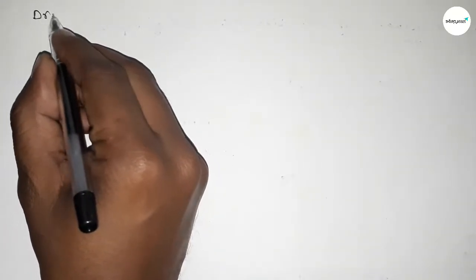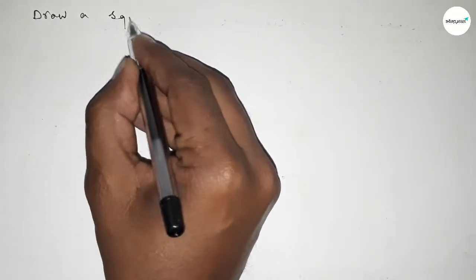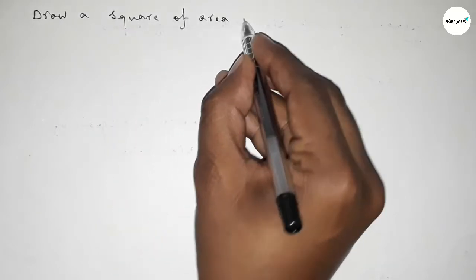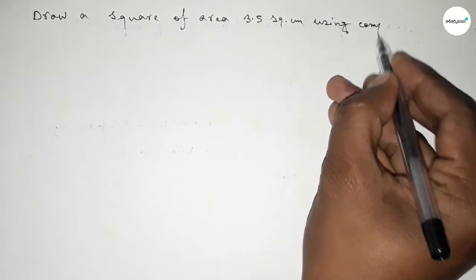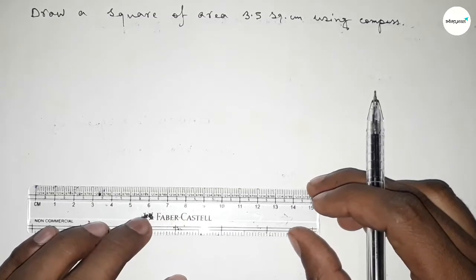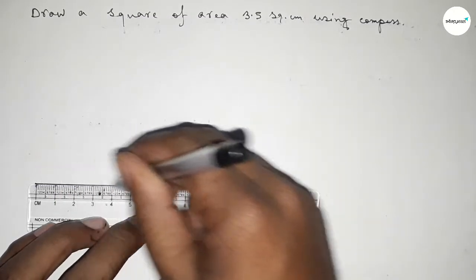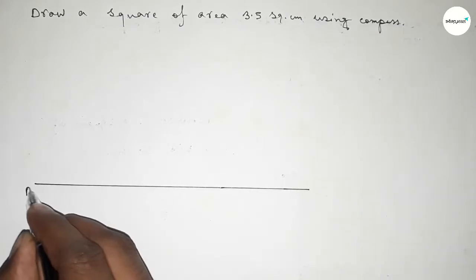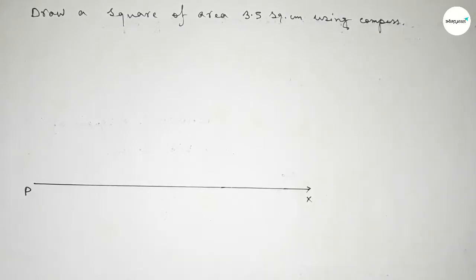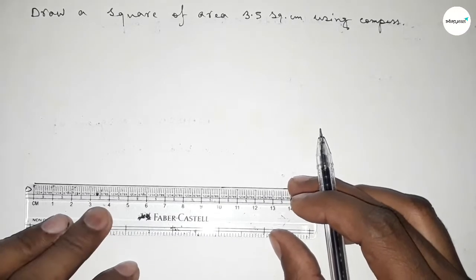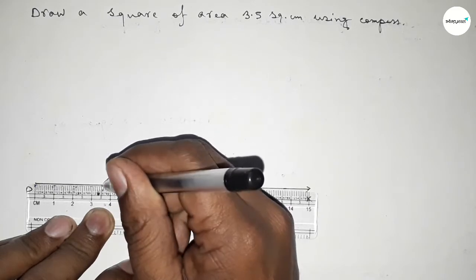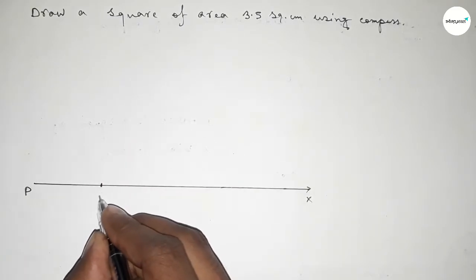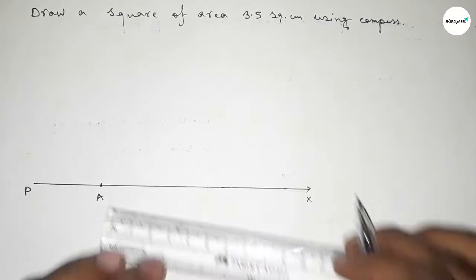Hi everyone, welcome to Saizzer Classes. Today in this video we have to draw a square of area 3.5 square centimeters using a compass. First, we draw a line of any length, taking point P and point X. Next, we take a length of 3.5 centimeters on the line PX and mark here point A.